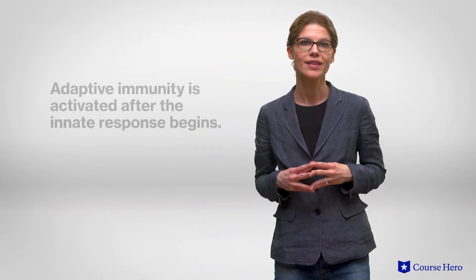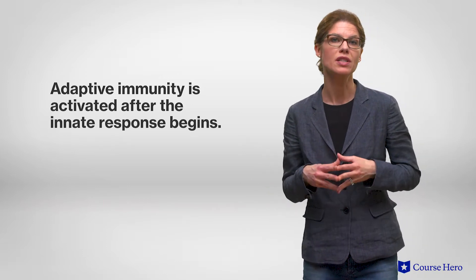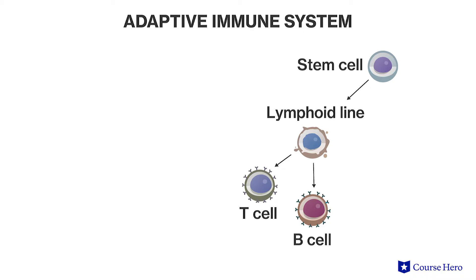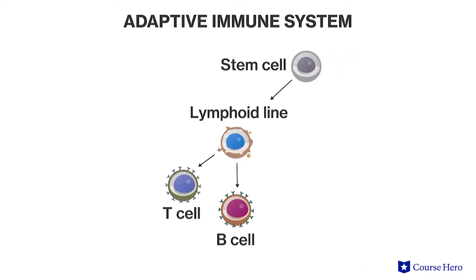Cells of the innate immune system also release chemicals that recruit cells of the adaptive immune system to the site of infection. Adaptive immunity is activated after the innate immune response begins and it develops more slowly, providing a last line of defense. The adaptive immune system mounts a response that is specific to the pathogen via specialized white blood cells known as lymphocytes. Lymphocytes of the B and T cell lineages must be primed by exposure to a foreign molecule or antigen before they can function.